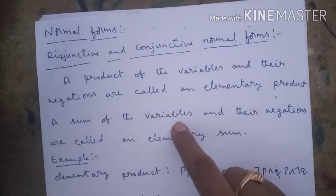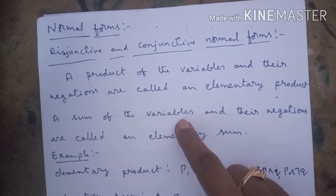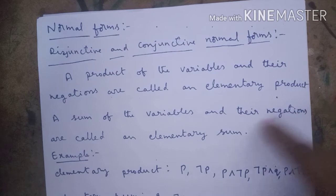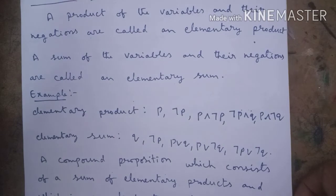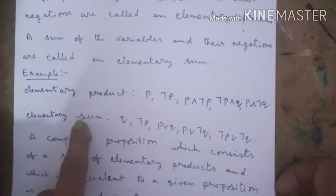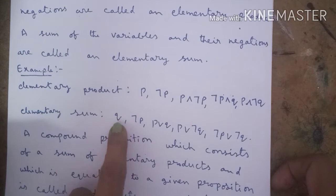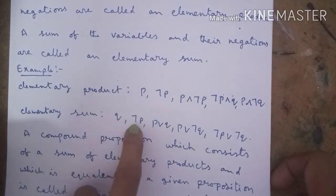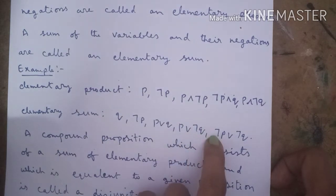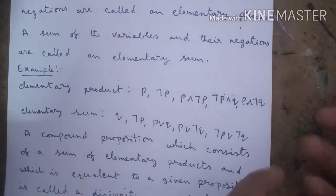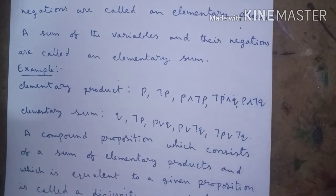In the same way, a sum of variables and their negations are called an elementary sum. For example, elementary sums include: Q, negation P, P, P or R, Q, P or R, negation Q, negation P or R or negation Q. The sum of variables and their negations are called elementary sum.